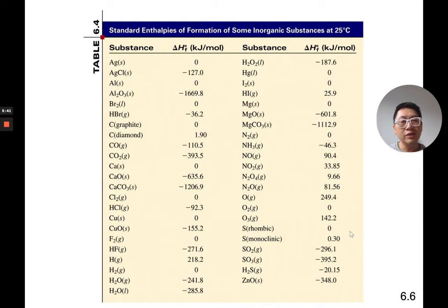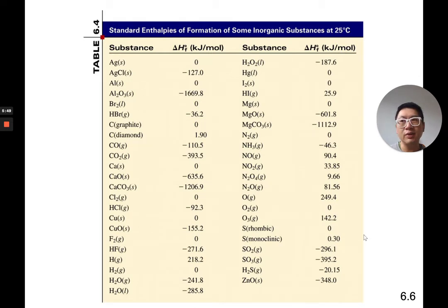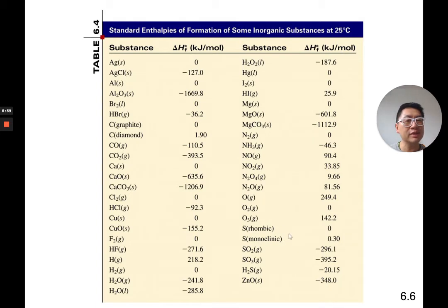Knowing that again, for sulfur it says rhombic sulfur and monoclinic. You've probably never heard of rhombic or monoclinic before unless you happen to be a mineralogist. Sulfur comes in multiple forms — something called rhombic and monoclinic. Which is the most stable one? Well, that's going to be a question.